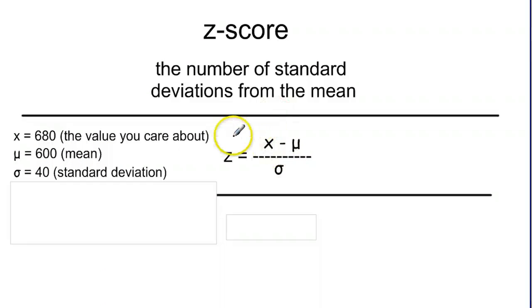So if we're going to pop values into this formula here, we're going to have our 680, the value we care about, minus our mean of 600 on top. And then on bottom we're going to have our standard deviation of 40.